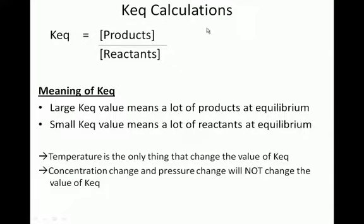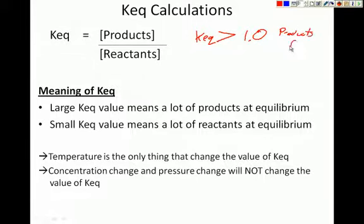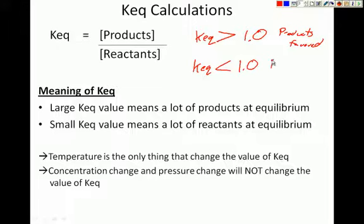If you have a KEQ value that is greater than 1, then products are favored. And if you have a KEQ value that is less than 1, then it's going to be reactants favored.